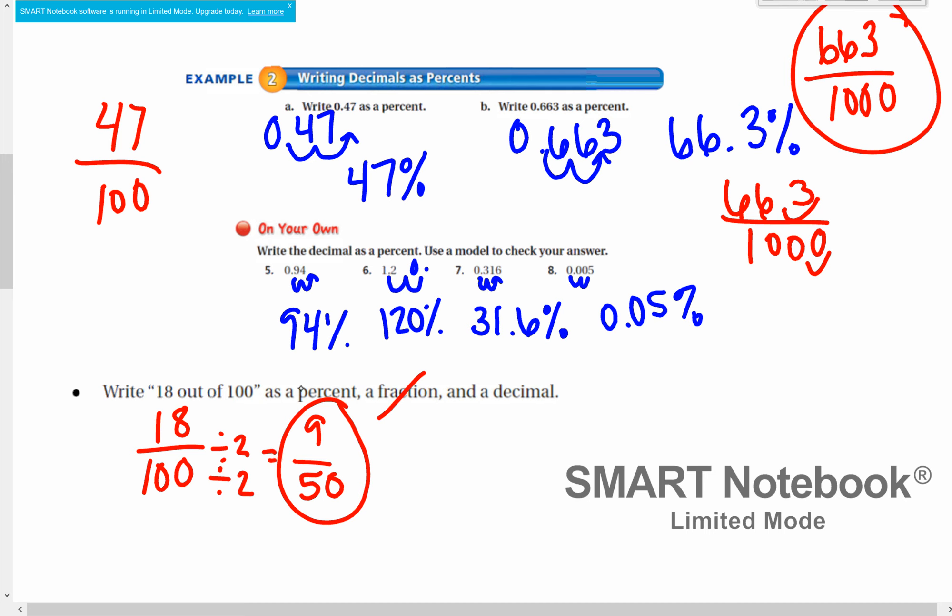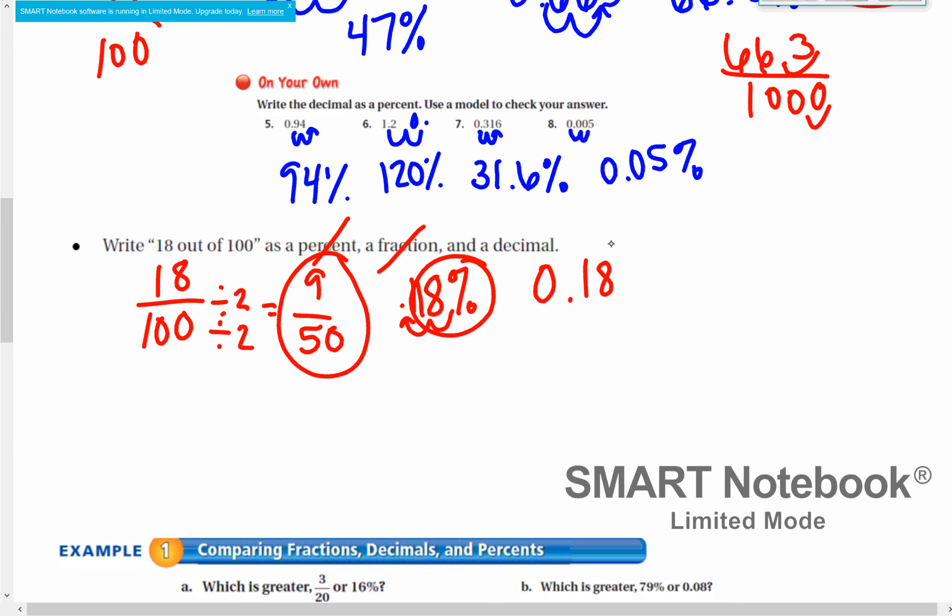Now, 18 out of 100 as a percent, well, 18 out of 100 as a percent is just 18%, because percent is out of 100. And then as a decimal, we would just move the decimal and the percent to the left twice, and we'd have 0 and 18 hundredths.